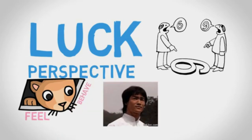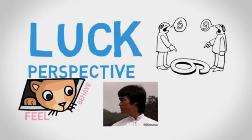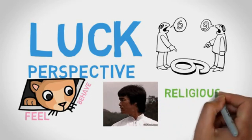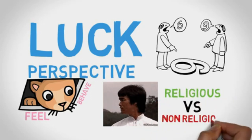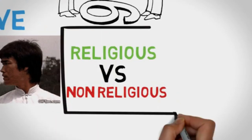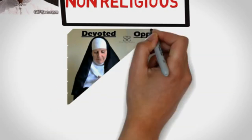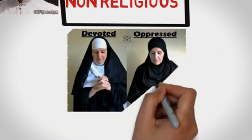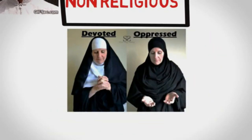For example, studies show that religious people have a higher tolerance for pain than non-religious. This is because they have framed pain in a certain way according to their belief. Another example, when a nun adorns the scarf, she is seen as religious. But when a Muslim woman does the same, she is seen as oppressed.